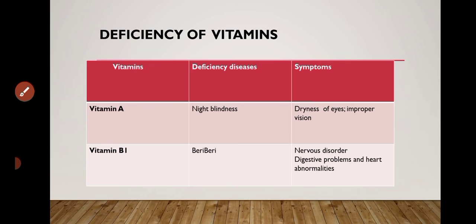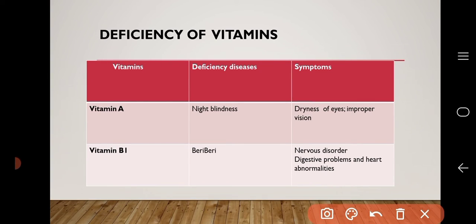Here we can see the deficiency of vitamins. Deficiency of vitamin A causes night blindness; symptoms are dryness of eyes and improper vision. Deficiency of vitamin B1 causes beriberi; symptoms are nervous disorder, digestive problems, and heart abnormalities.